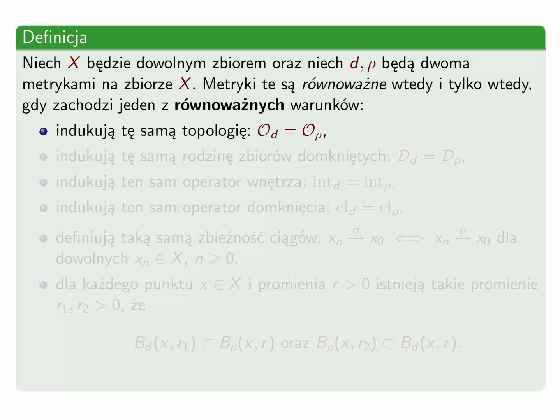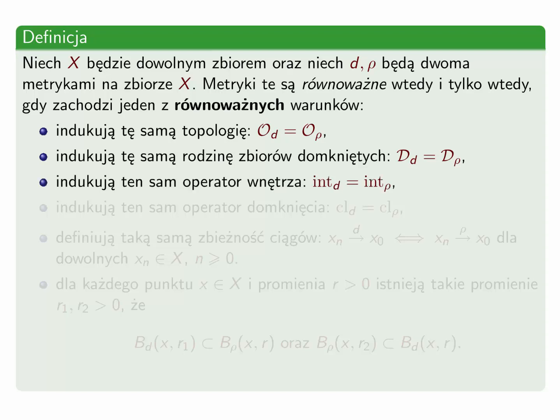Po pierwsze, metryki te indukują tę samą topologię. Oznacza to, że każdy zbiór otwarty względem metryki d jest również otwarty względem metryki ρ i na odwrót. Drugi warunek: indukują tę samą rodzinę zbiorów domkniętych, czyli każdy zbiór domknięty względem metryki d jest również domknięty względem metryki ρ i na odwrót. Jest to równoważne równości operatorów wnętrz, czyli wnętrze dowolnego zbioru względem pierwszej metryki jest równe wnętrzu zbioru względem drugiej metryki. Podobnie jest to równoważne równości operatorów domknięć.